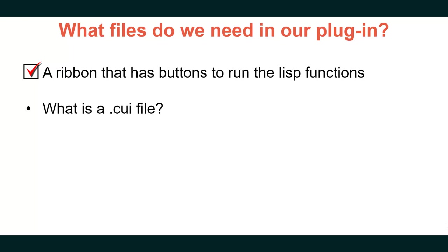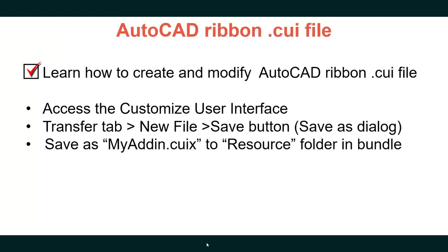Now that we have our LISP finished, we need a ribbon with buttons to run the LISP functions. A CUI file is a menu file. If we go into Civil 3D and create our own ribbon, add it to a workspace, and save it, it saves as a .CUI file. Now let's learn how to create and modify an AutoCAD ribbon CUI file.